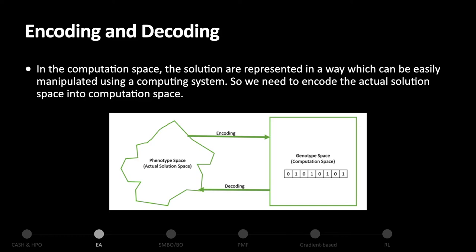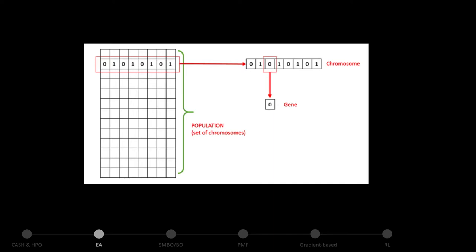In the computation space, solutions need to be represented in a way that can be easily manipulated by a computing system. So we encode the actual solution space, or phenotype space, into the computation space, or genotype space, in GA. In GA, the genotype is often encoded in a fixed-length representation. After encoding, the population can be represented as a matrix of chromosomes. A chromosome is a solution to our given problem, consisting of a set of genes. A gene is one element or position of a chromosome.